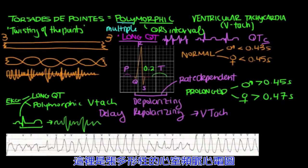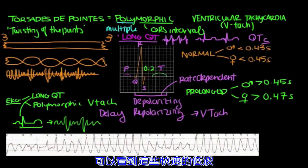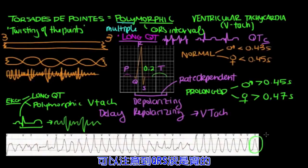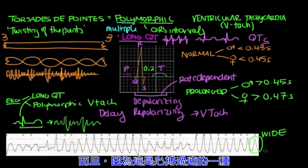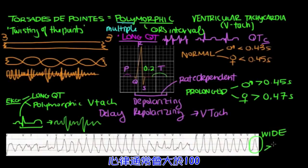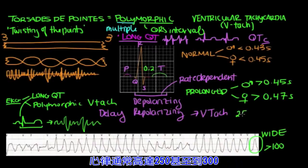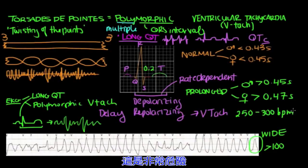Here is an EKG of someone with polymorphic V-tach. You have these short-amplitude waves, followed by these large-amplitude QRSs, and then short again, and then large-amplitude. You notice that the QRSs are wide complexes. And, because of the tachycardia, the heart rate is greater than 100.